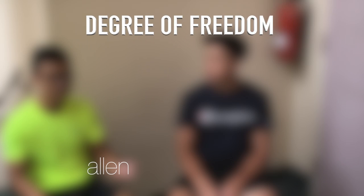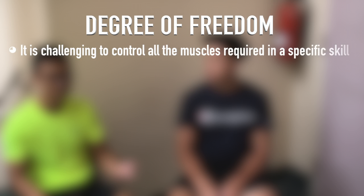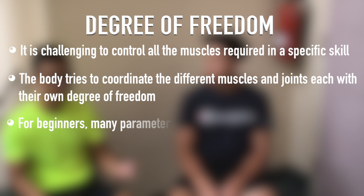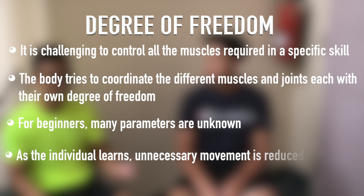This is due to the degree of freedom problem. The human body faces a challenging task to control all the muscles required in a specific skill. This is a problem as the body tries to figure out how to coordinate the different muscles and joints, each with their own degree of freedom, to simplify the task. Beginners frequently face this problem as their brain does not know how to coordinate the muscles around the skill. However, with adequate practice, the beginner will learn to isolate the necessary muscles and eventually reduce the degree of freedom problem.